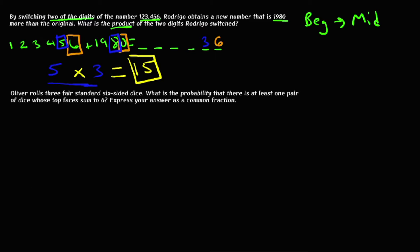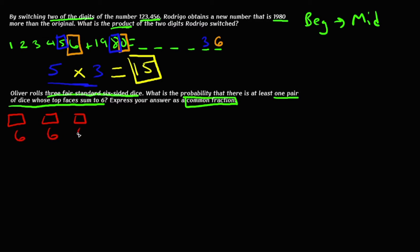The second question is not going to be as easy. It says: Aliyah rolls three fair standard six-sided dice. What is the probability that there is at least one pair of dice whose top faces sum to six? Express your answer as a common fraction. The first step is to find the total number of possibilities. There are three dice, each with six possibilities, so we multiply them together to get 216 total possibilities.